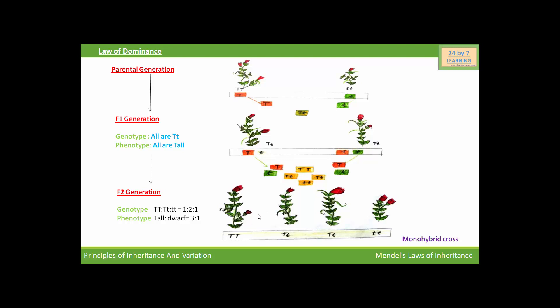This means in F2 generation, three parts were tall plants and only one part were dwarf plants. Here in F2 generation, expression of both characters, tallness and dwarfness, was visible.